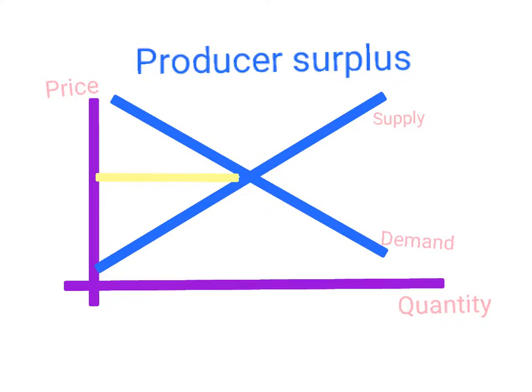Just like there is consumer surplus, there is also producer surplus. Producer surplus is the difference between what producers are actually selling a product for and the equilibrium price. Some producers were willing to sell the product for a lower price, maybe they had really low costs.